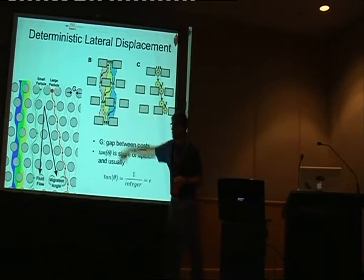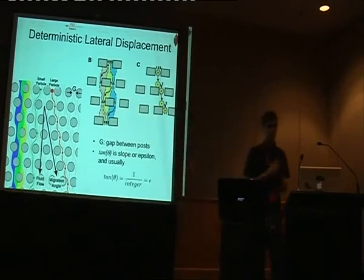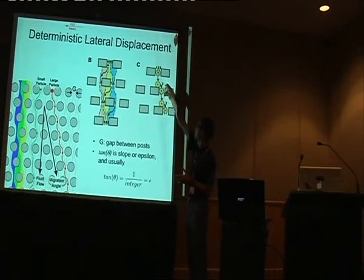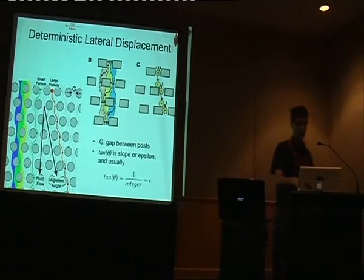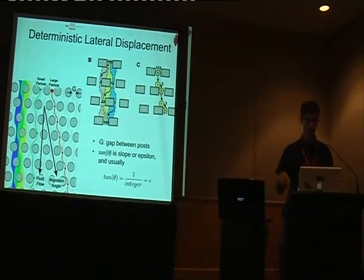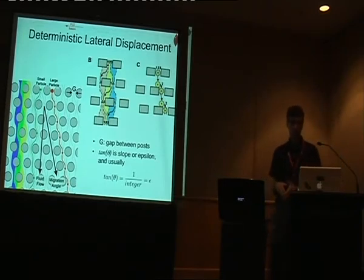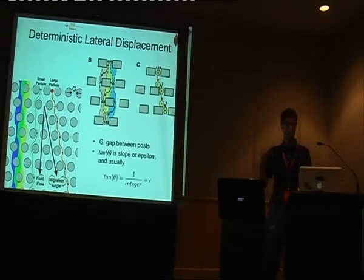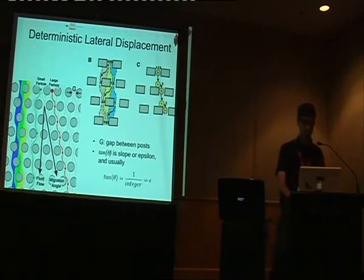If you're a small particle, you fit within the first flow lane and go straight through, hardly even noticing the posts. If you're a big particle and don't fit in the first flow lane, you end up in lane two — you stay in lane two and travel at an angle. So you can separate large particles from small particles by an angle theta. We generally make the angle such that one over tan(theta) equals an integer, which gives you the periodic system. That's really key. There's a transition from being 'small' to being 'big' that can be quite sharp, so everything below a critical size d_c goes one way and everything above it goes another.